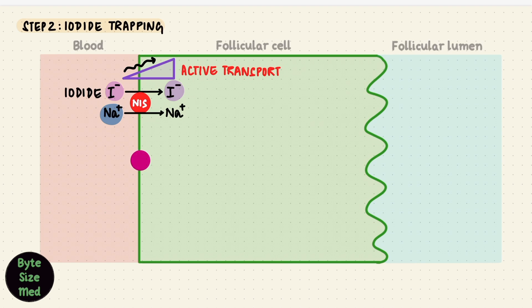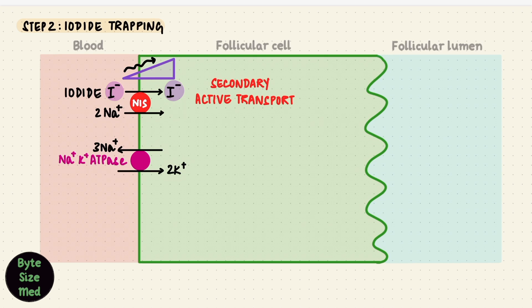The energy for this movement comes from sodium. Because there's also a sodium potassium ATPase on the basolateral membrane. That sends three sodium ions out of the cell and two potassium ions into it. Creating a concentration gradient for sodium to enter the cell from high to low. This is secondary active transport and it moves two sodium ions and one iodide ion into the cell. Now that iodide anion is inside the cell.